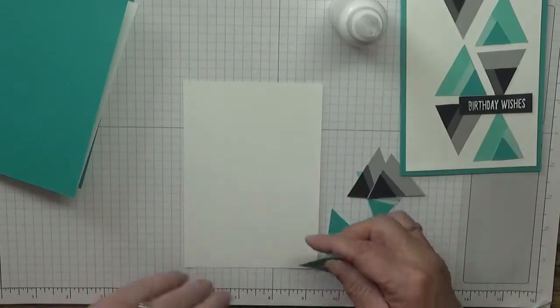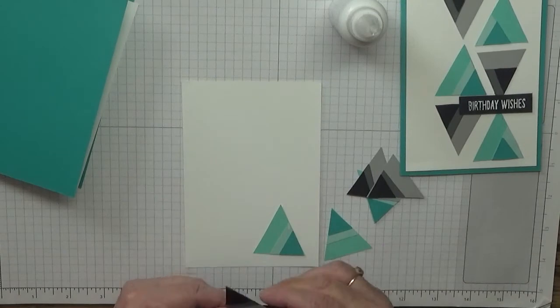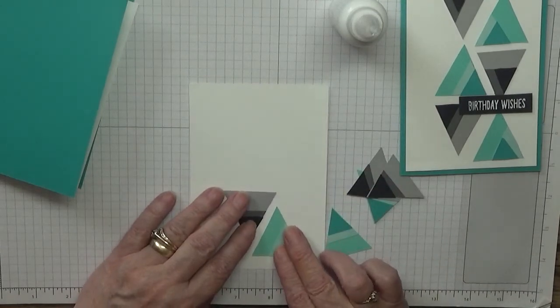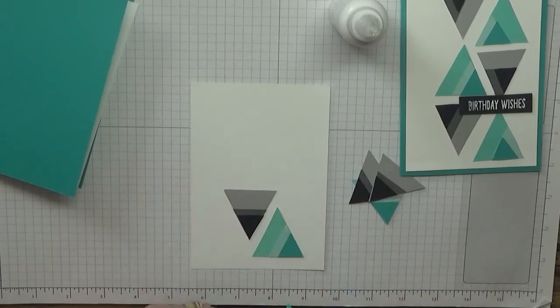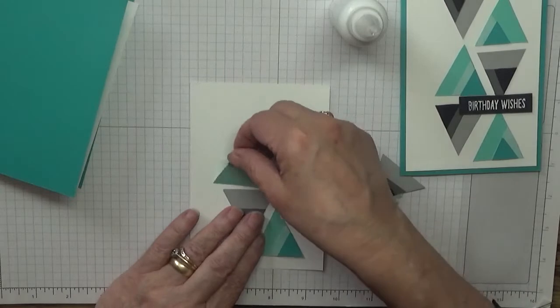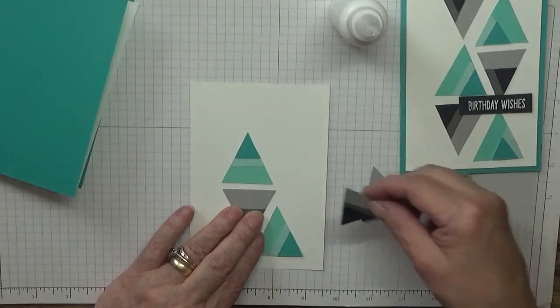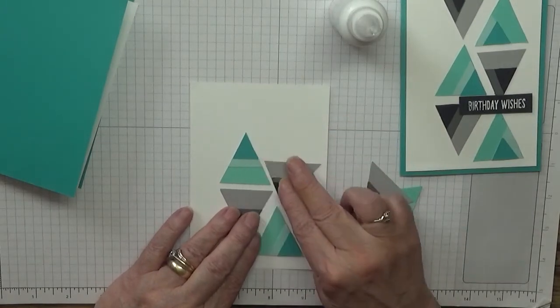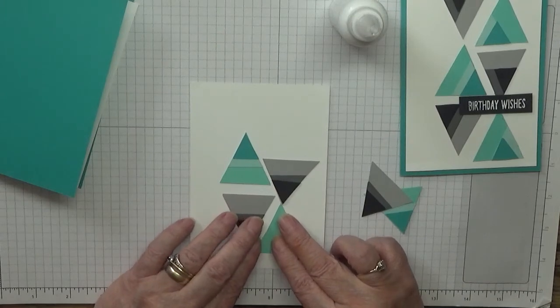So with this one all we do is just lay them out. I've got the blues sticking up and the greys I'll stick in, I'm going to stick in the point down. So this one is a blue so it's going to go up there and then we have a grey.